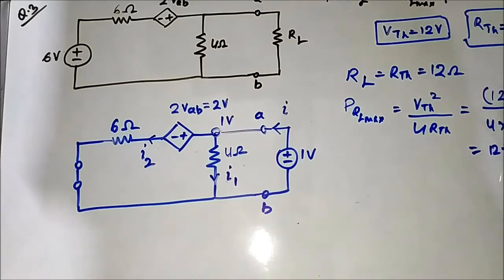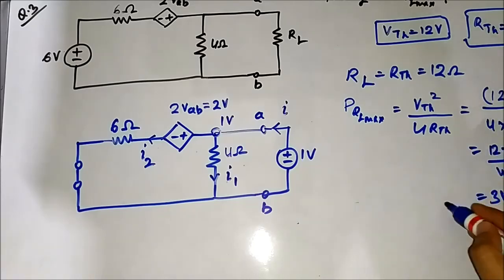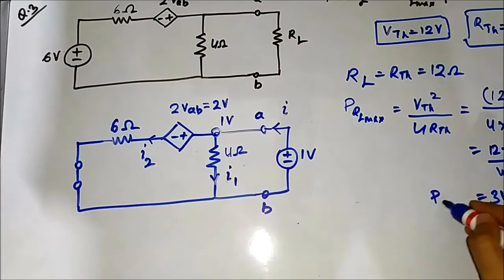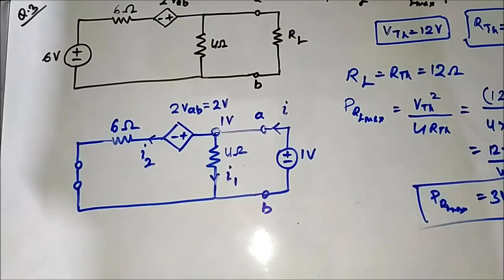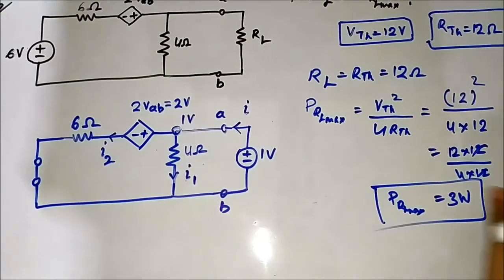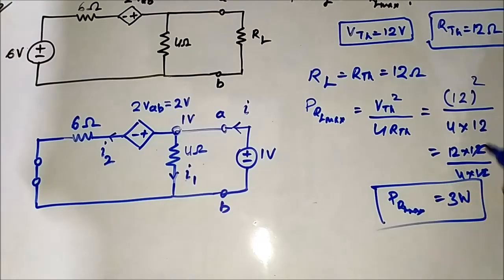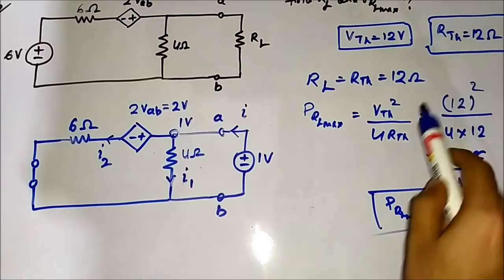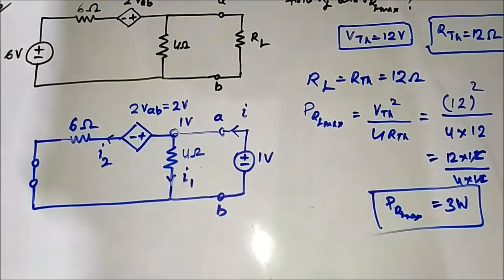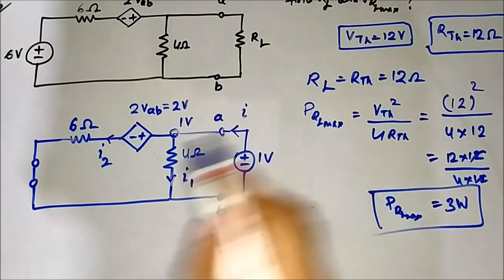That is 12 times 12 divided by 4 times 12. The 12s cancel, leaving 12 divided by 4, which is 3 watts. So P_RL_max equals 3 watts. We have obtained both VTH equal to 12 volts and RTH equal to 12 ohm, and this completes the maximum power transfer theorem problem. This was the third question.